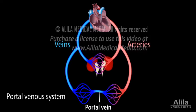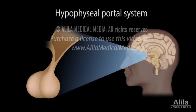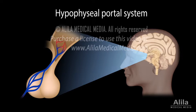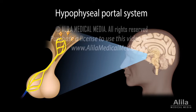With this arrangement, a portal system allows direct transportation of substances from one organ to another without spreading them all over the body. An example is the hypophyseal portal system, which connects the hypothalamus and pituitary gland. Hormones produced by the hypothalamus are secreted into the portal system to reach the anterior pituitary, where they regulate production of pituitary hormones.